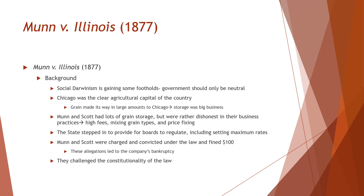There was the Granger movement. In 1871 a law was passed in Illinois that established a board to regulate the maximum grain storage prices and other aspects. The state said this was compatible with the Constitution, which said they were subject to the power of regulation. Because Munn and Scott were not very honest, they were charged and convicted and fined $100.